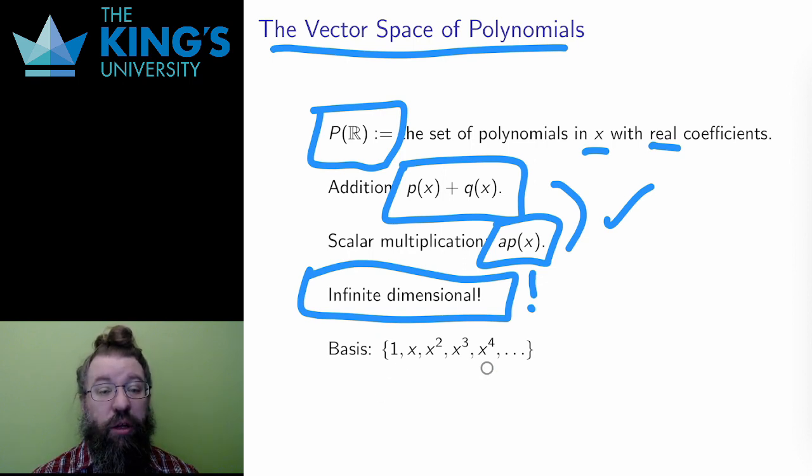Each polynomial stops somewhere, but I can consider a polynomial of any degree n. Therefore, 1, x, x squared, x cubed, x to the fourth, and so on, is a basis. All x to the n are here, all infinitely many. The basis has infinitely many things, and they are all linearly independent.